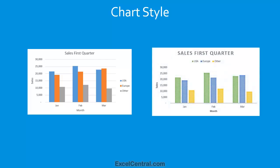You can see that both charts are of the same type — they're both column charts — and both have the same elements, including the Chart Title Element, the Axis Title Elements, and the Legend Element. The differences in appearance — that is, the colors, shading of bars, fonts used, and the position of the legend — are collectively referred to as the Chart's Style.